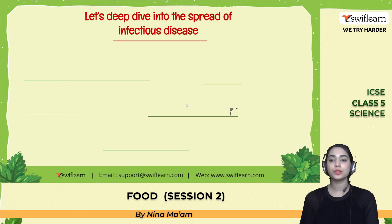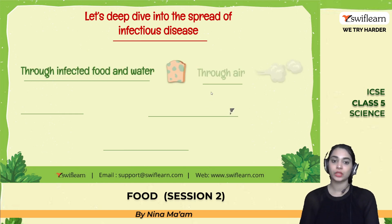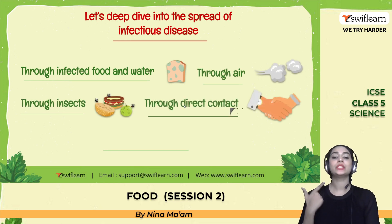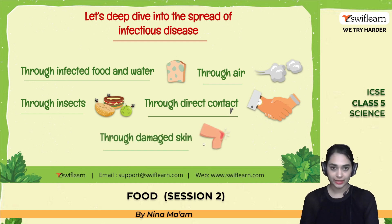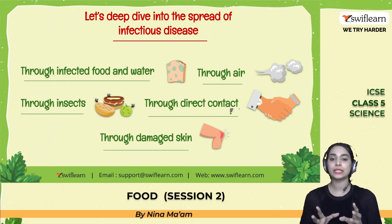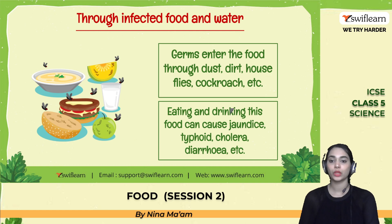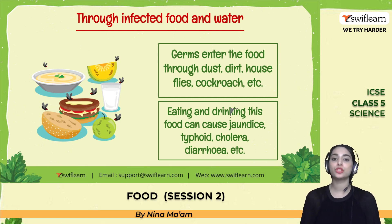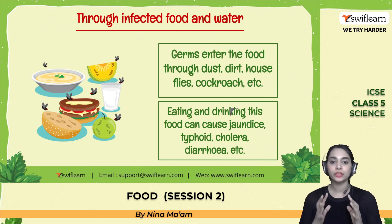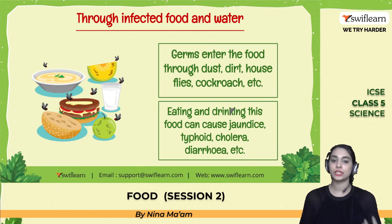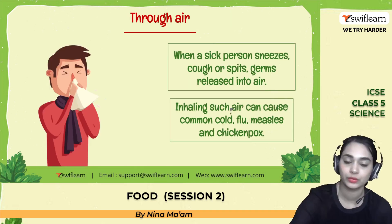Infectious diseases are caused by contaminated food and water, air, insects, direct contact with people, and damaged skin. Through infected food and water, germs enter via dust, dirt, house flies, and cockroaches. Eating or drinking such contaminated food can cause jaundice, typhoid, cholera, and diarrhea. We should always cover food to prevent these infections.